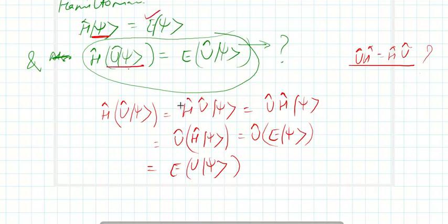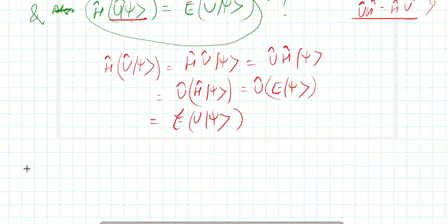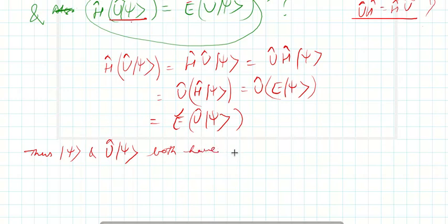To sum up this result, I can see that |ψ⟩ and U|ψ⟩ both have the same energy, and hence are said to be degenerate. That's all for this lecture, and thanks for watching.